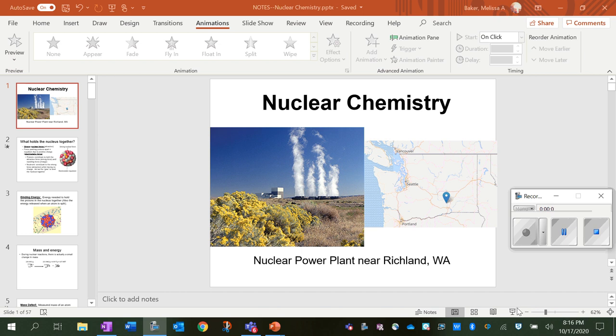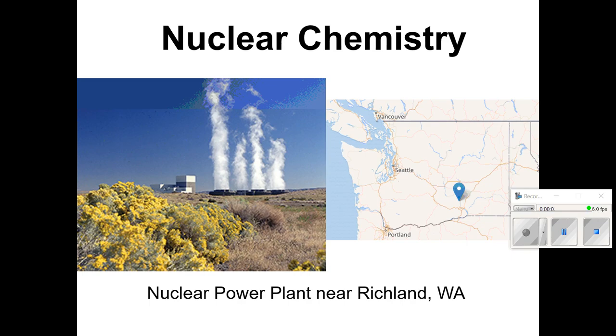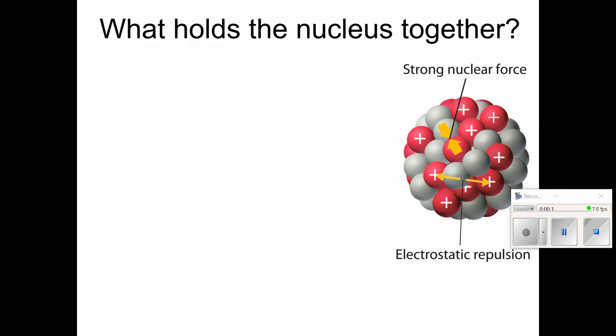Let's talk about nuclear chemistry. I have a picture here of the one nuclear power plant that's in the state of Washington, and it's near Richland, Washington. So obviously we're going to be talking about the nucleus if we're talking about nuclear chemistry.